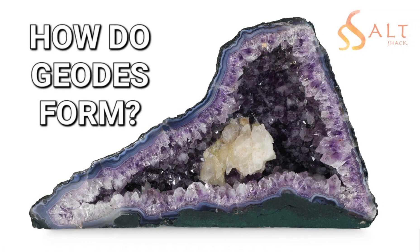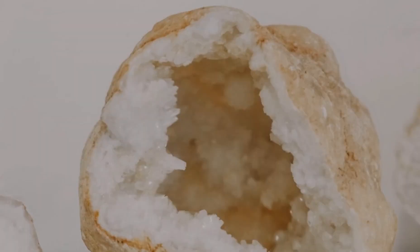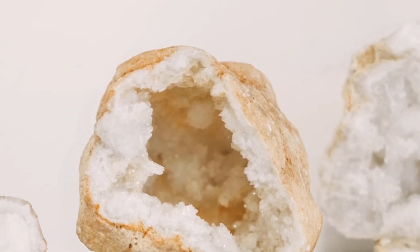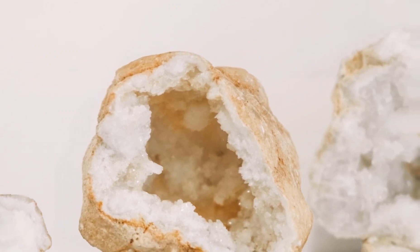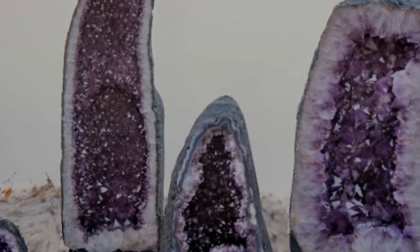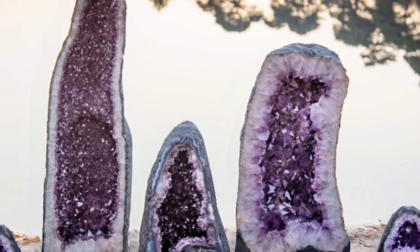Geodes are geological formations that are made up of hollow rocks or minerals with a layer of crystals lining the inner walls. They can form in a variety of ways, but the most common method of formation is through the process of what's known as cavitation.